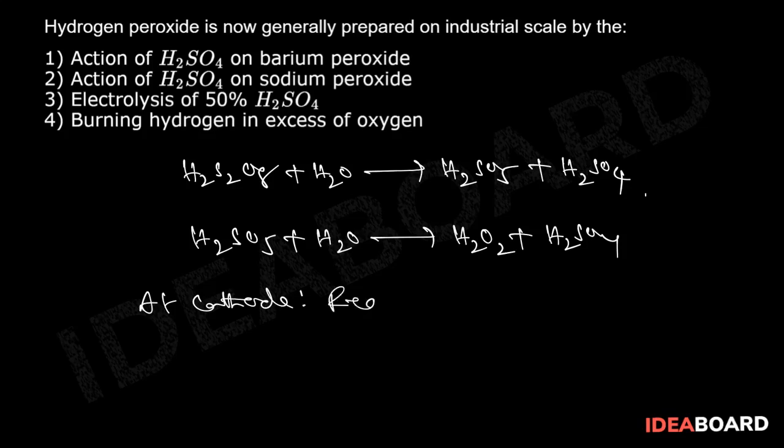Reduction means gain of electrons. In this case, the cation is H+. From the equation we observe, 2H+ will take two electrons to form H2.